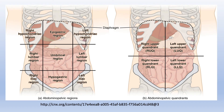In the inferior bottom row, we have right and left iliac regions. Some authors describe these as right and left inguinal regions because there is an inguinal ligament in this area. The hypogastric region has another name — pubic region — because there is the pubic bone here.